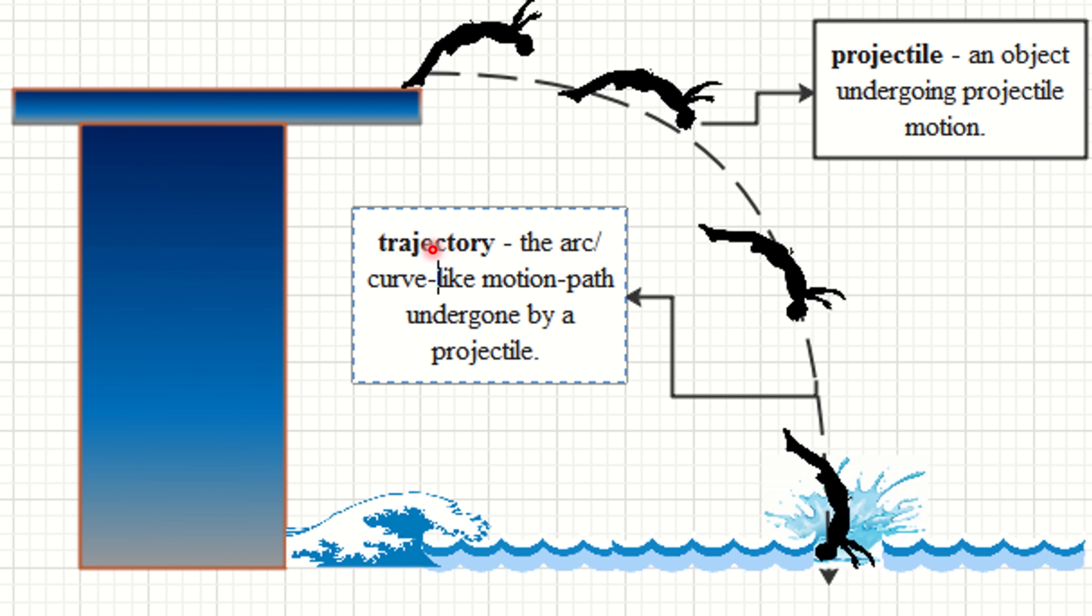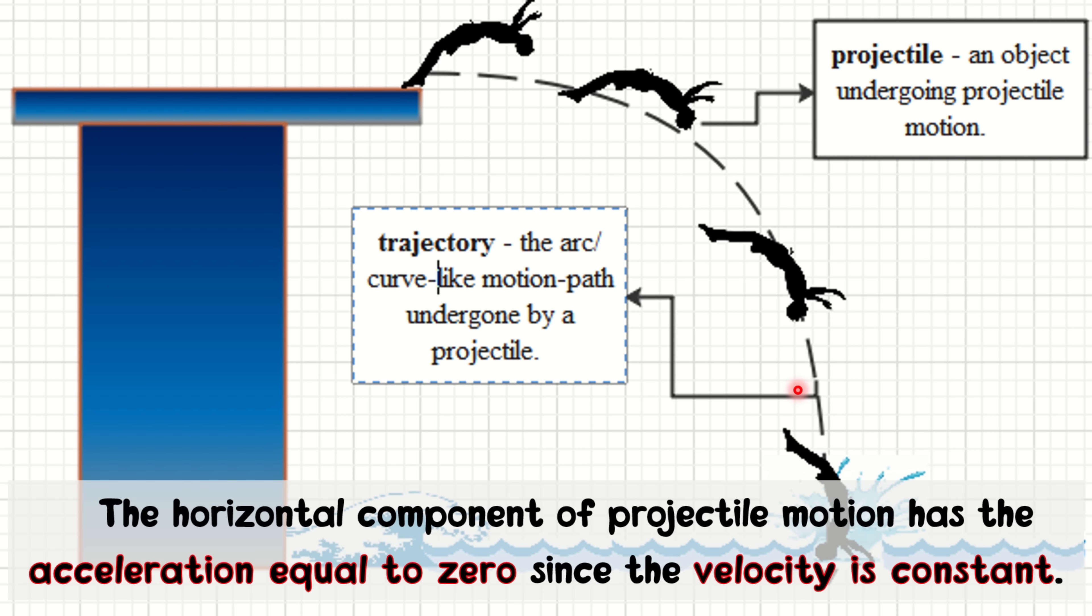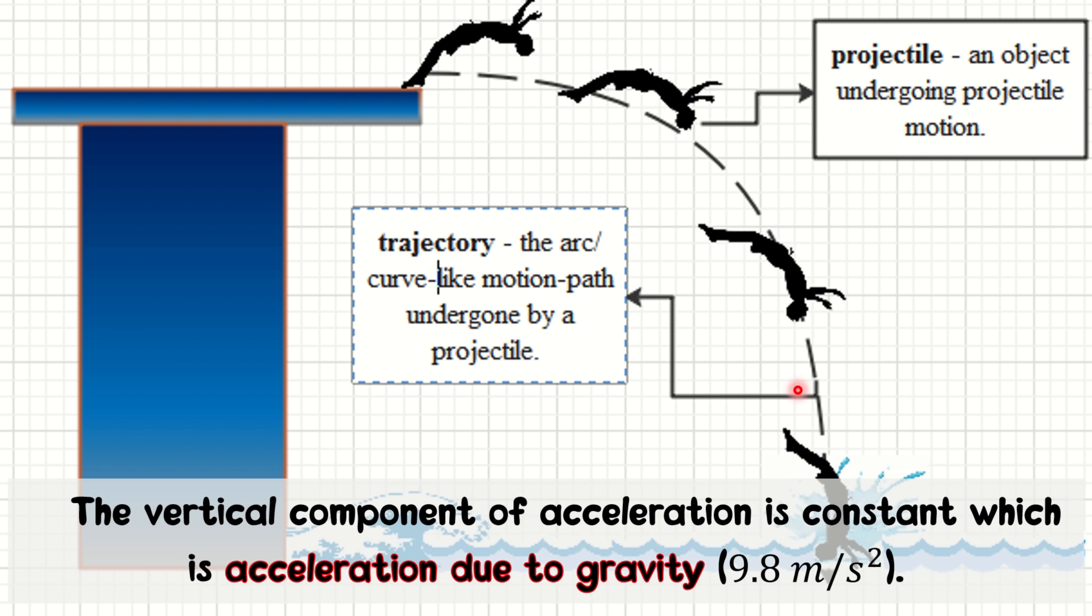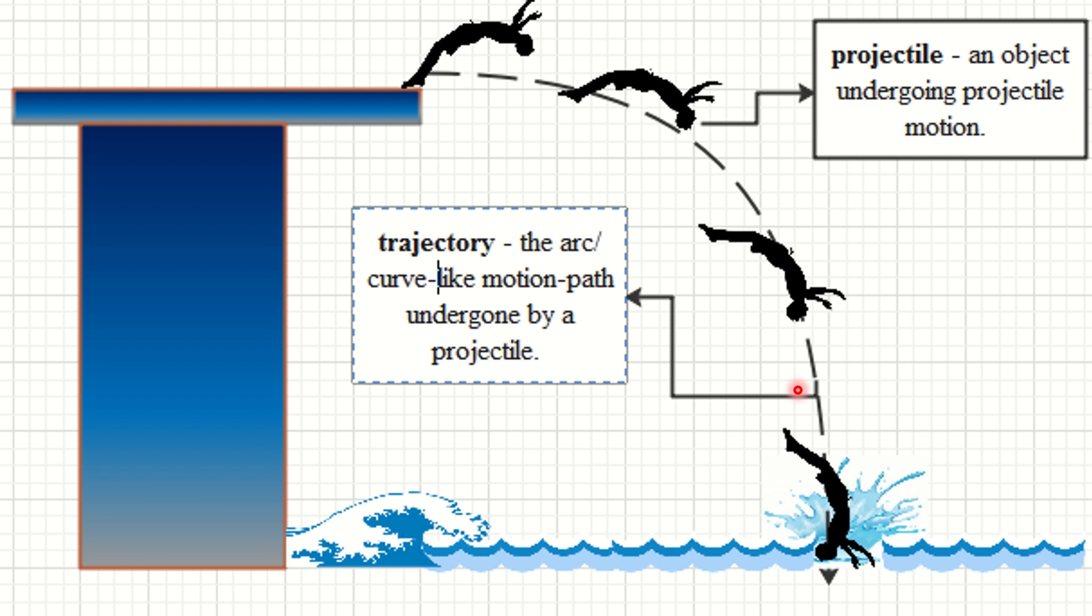From the previous lesson, you are introduced to the basic concepts of projectile motion such as trajectory and the definition of projectile motion itself. A body in projectile motion has been established to have a parabolic trajectory with horizontal and vertical components. The horizontal component of a projectile motion has acceleration equal to zero since the velocity is constant. On the other hand, the vertical component of acceleration is constant, which is acceleration due to gravity, and that is always equal to 9.8 meters per second squared.